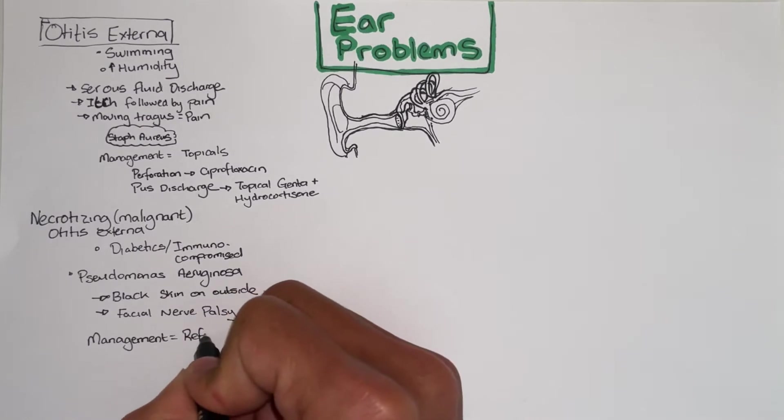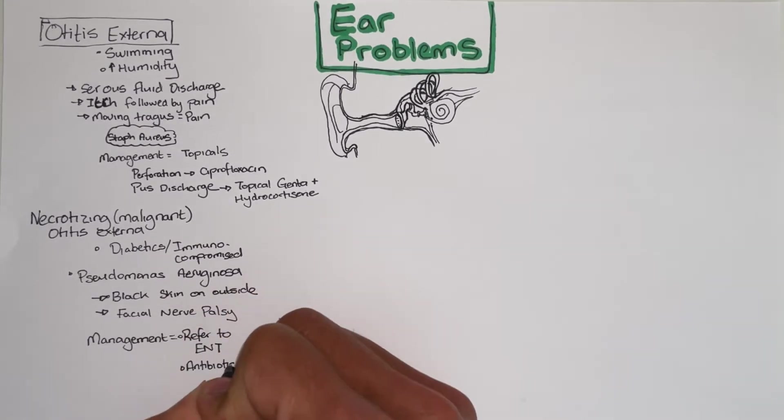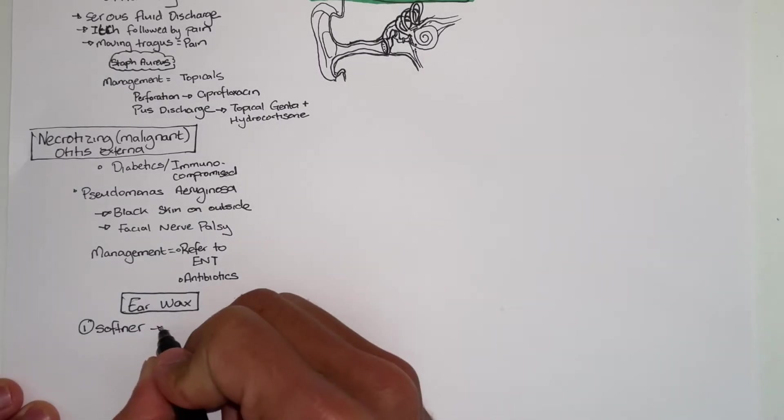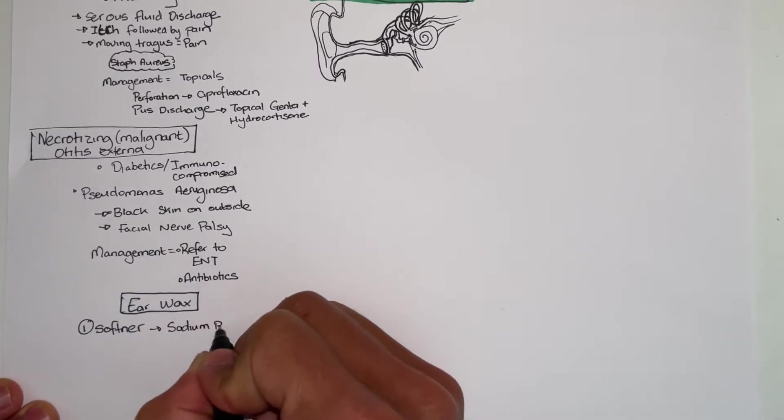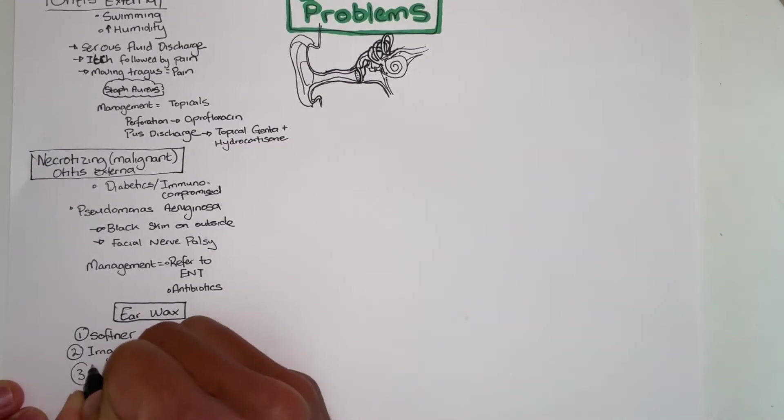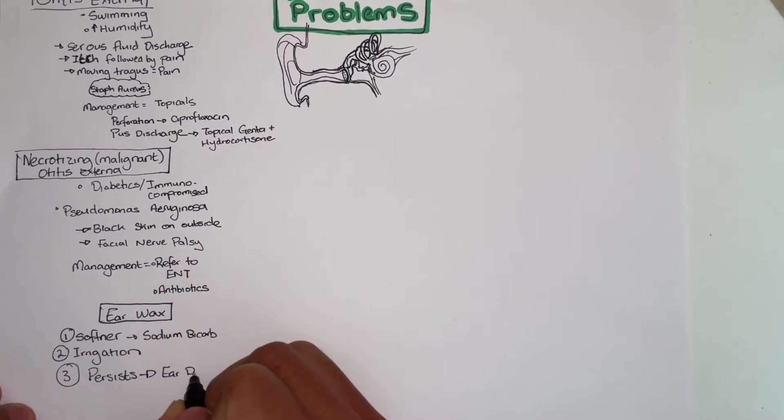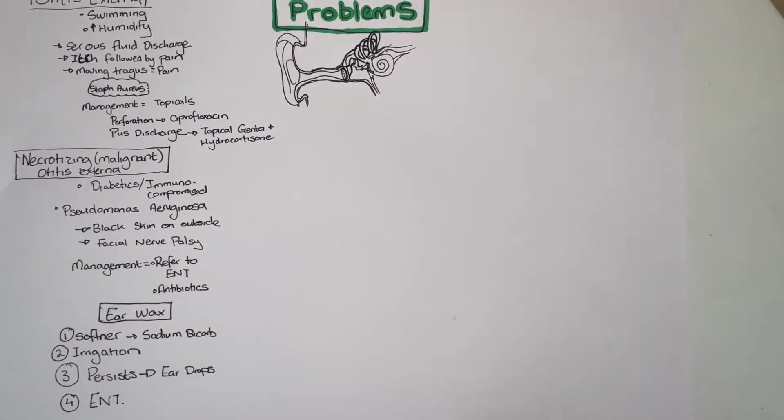The management is to refer to ENT and give them antibiotics. Then lastly for the external part of the ear, earwax buildup. The management are these four points. First use a softener such as sodium bicarb. Then secondly irrigate it. If it persists use eardrops and last resort is referred to ENT.